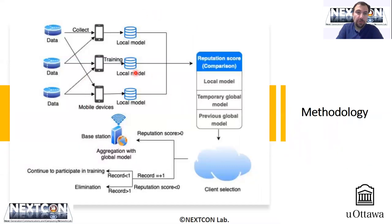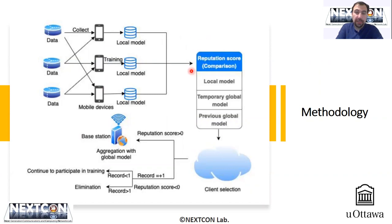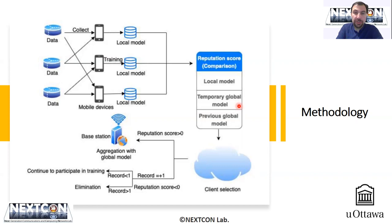This is an overview of the methodology proposed in this work. Multiple participants contribute to this system by collecting and submitting data, and every participant has their own local model. The system selects local models based on a reputation score. The reputation score is calculated based on a comparison of several metrics, and the selected local models are used to form a temporary global model, while the previous global model is saved for comparisons.